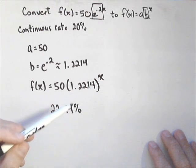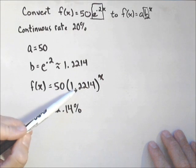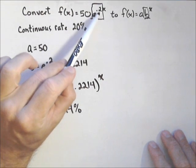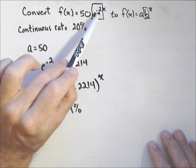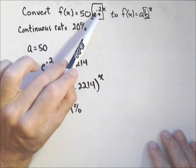So that's the different information we get from the two models. Notice they're both increasing, because this has a base larger than 1, and this one had a rate larger than 0, or positive rate.